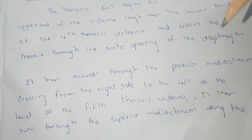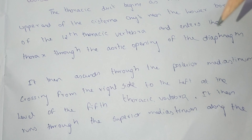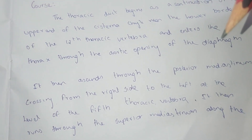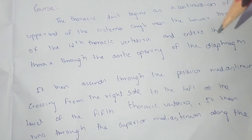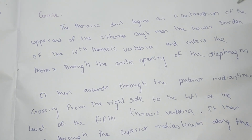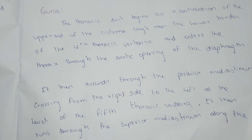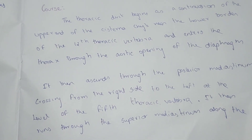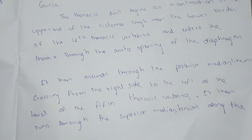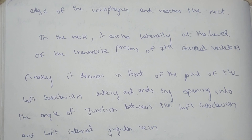It then ascends through the posterior mediastinum, crossing from the right side to the left at the level of the 5th thoracic vertebra. It then runs through the superior mediastinum along the edge of the esophagus and reaches the neck.